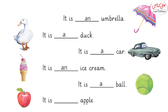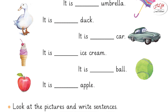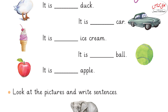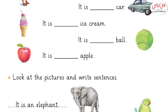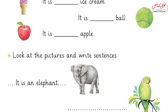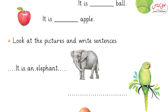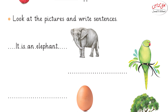It is apple. Yes, it is an apple. Very good. Jin words ke beginning sound consonant hote hain, unke saath hum A use karte hain. Aur jo consonant nahi hote, vowels hote hain, unke saath hum AN likhte hain.